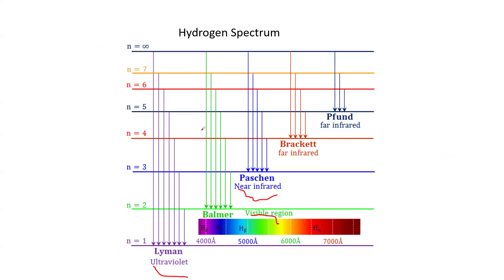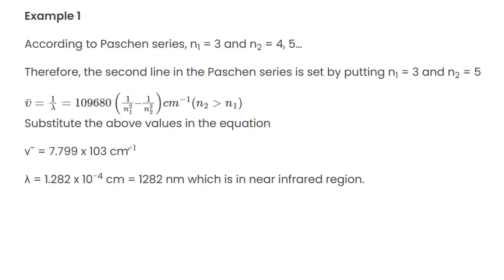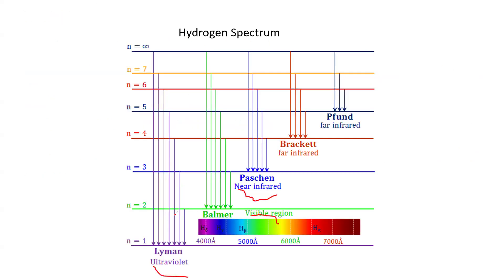For example, in the case of the Pfund series, N1 starts with 3 while N2 starts with 4. For the Lyman series, N1 is 1 and N2 is 2. According to the Pfund series, N1 is 3 and N2 can be 4 or 5. For the first line, N2 equals 4, and for the second line, N2 equals 5.